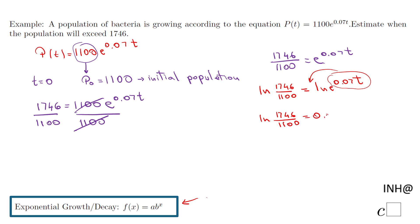And now we have 0.07t and natural log of e. But this natural log of e, you should remember, is nothing else than 1. So in order to solve for t, I'm going to divide by 0.07, or multiply by 1 over 0.07. I think that is better.